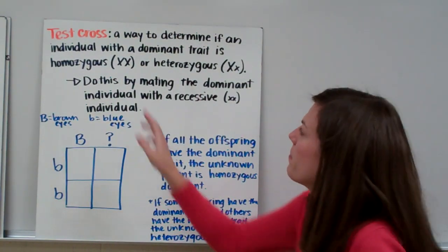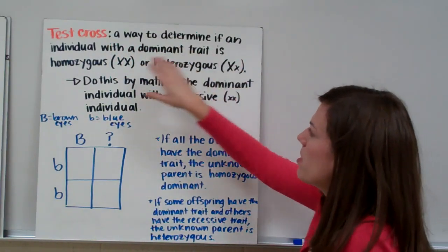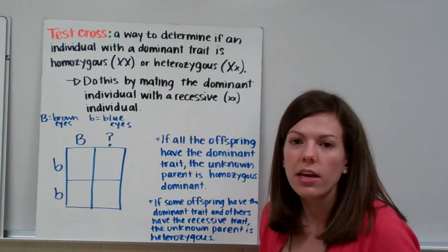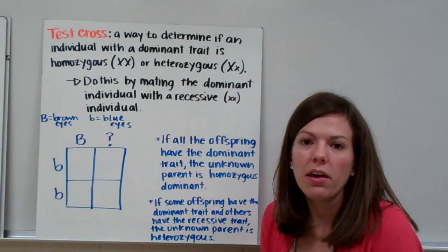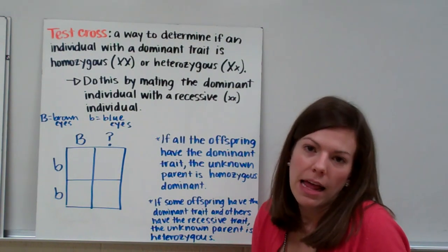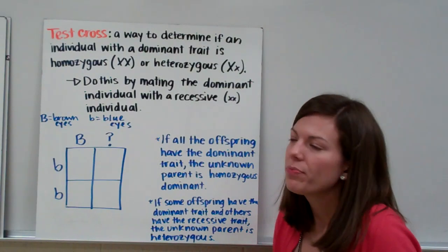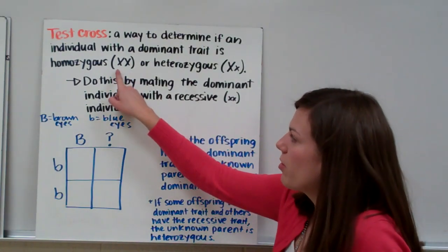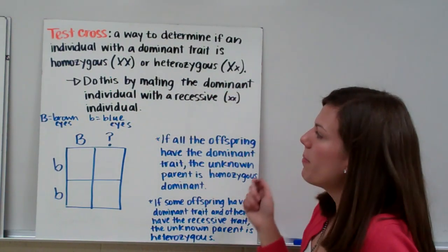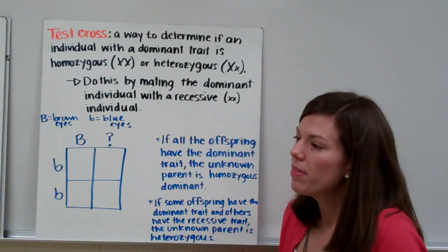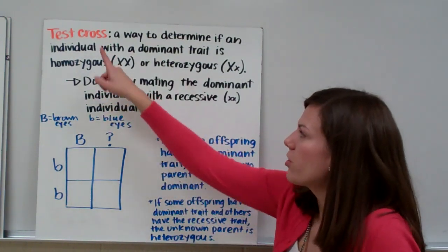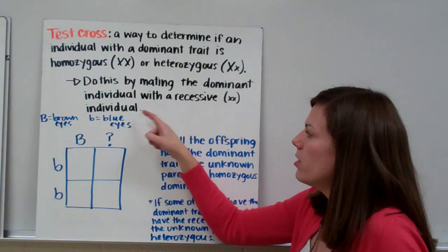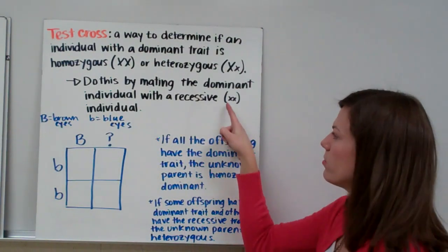One more thing — you need to know the term test cross. A test cross is a way to determine if an individual with a dominant trait is homozygous or heterozygous. Just by looking at something's phenotype, you can't figure out if it has two big letters or a big letter and a little letter, because the dominant allele masks the recessive one. In a test cross, we always mate the unknown dominant individual with a recessive individual — one with two little letters.